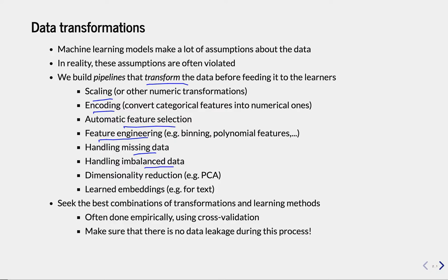Sometimes the data is unbalanced — we may have a lot of data from one class and very few from another, and we need to deal with that as well. There are also a whole range of techniques which take high-dimensional data and make it lower-dimensional. PCA is, for instance, a very well-known example. And finally, some kinds of data, like text, are not easy to represent with features. The best-known techniques today are to learn embeddings — a numerical representation of typically non-structured data so that we can learn from it.